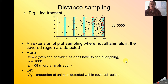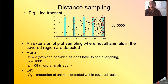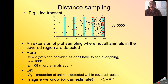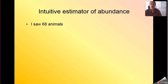We now find ourselves in a situation where, because we don't know the proportion of animals in our covered region that we see, we have to estimate what that proportion really is. We're going to use the notation p sub a to indicate the proportion of animals in the covered region little a that we detect. For the moment, let's operate under the belief that someone told us that p sub a was 0.7.